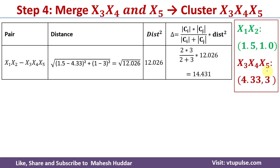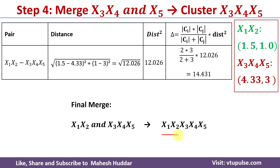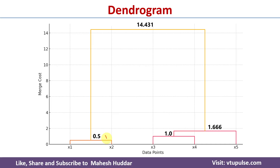We recalculate merging cost for the final pairing: {x1,x2} with {x3,x4,x5}. The Euclidean distance is square root of 12.026 and distance squared is 12.026. With cardinality of Ci equal to 2 and cardinality of Cj equal to 3, the merging cost for this pair is 14.433. Since we have only one pair, we merge these two clusters to get the final merged cluster {x1, x2, x3, x4, x5}.